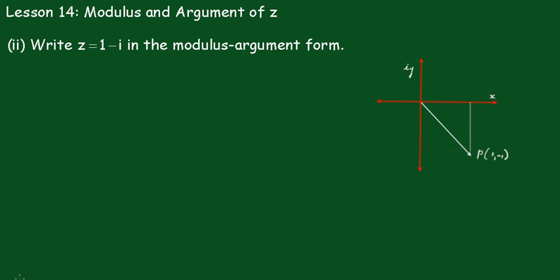Part 2, write z equals 1 minus i in the modulus-argument form. Now, I suggest that you draw a little diagram here. One of my students, some years ago, kept getting these wrong. It's because he didn't draw the diagram. You can see here, there's your theta, and there's a 1, and it's a minus 1 here. So, this is the angle we're after here.